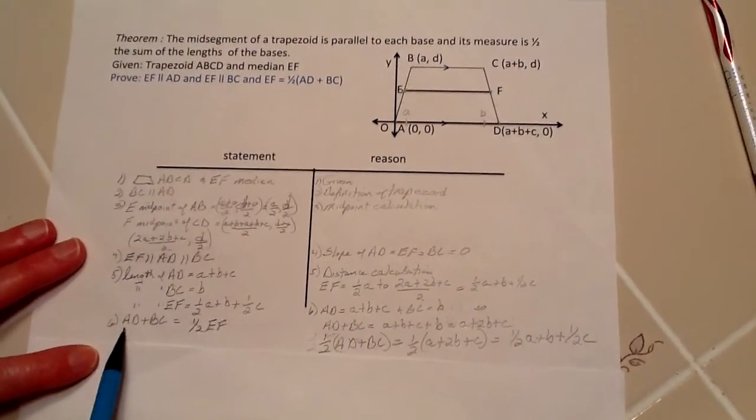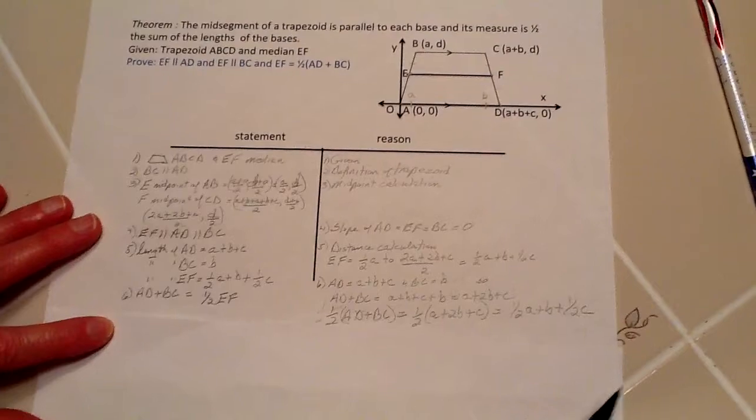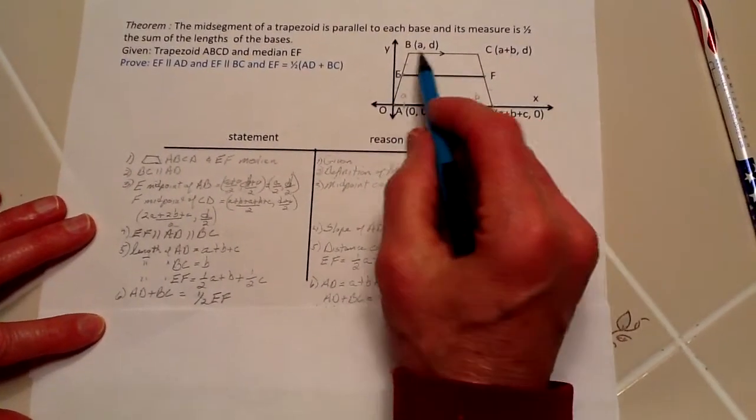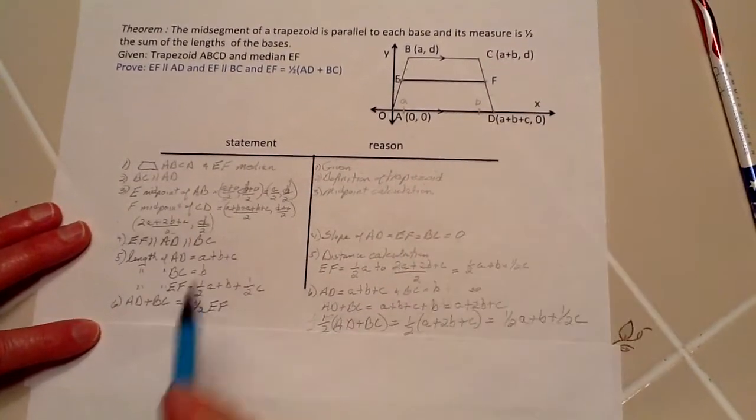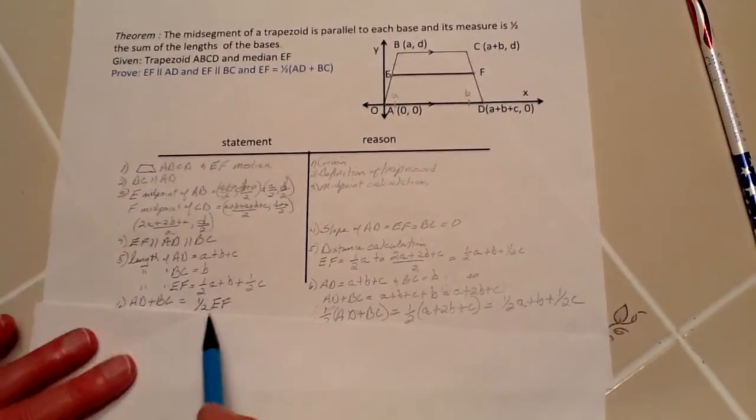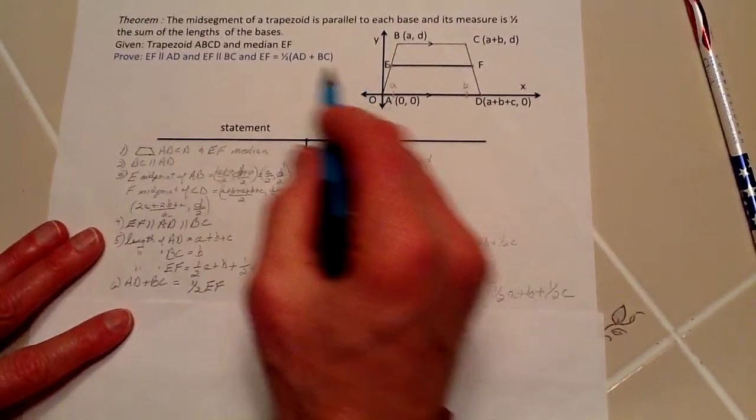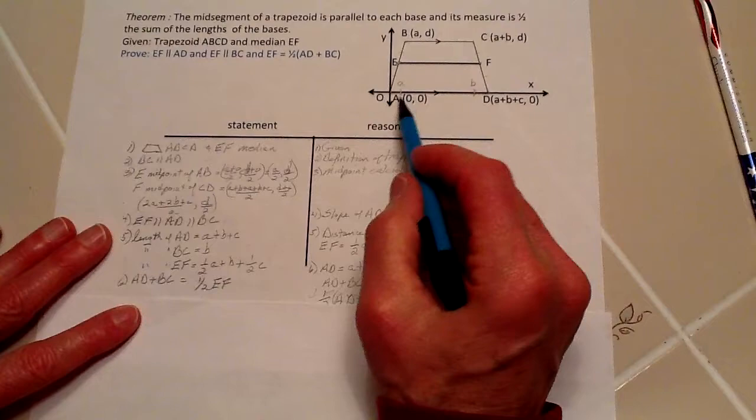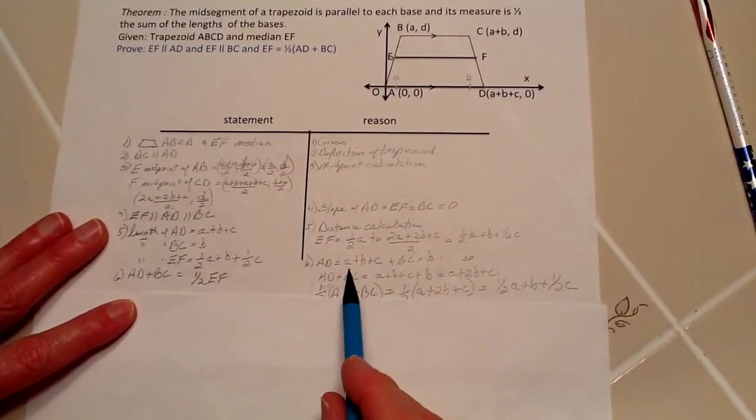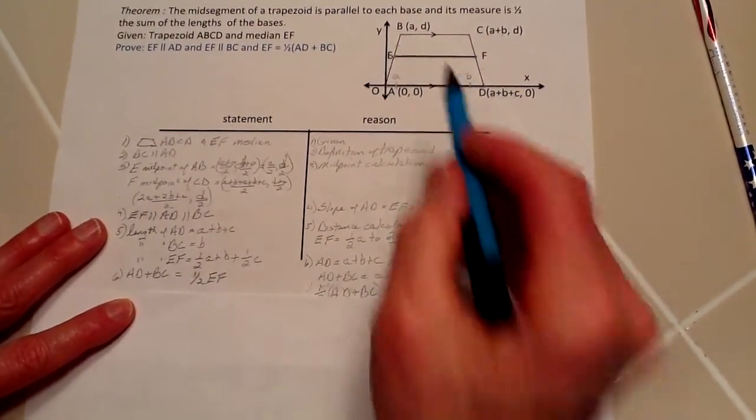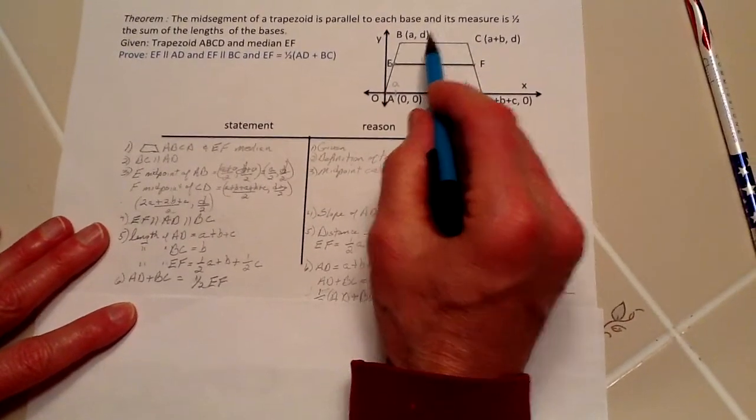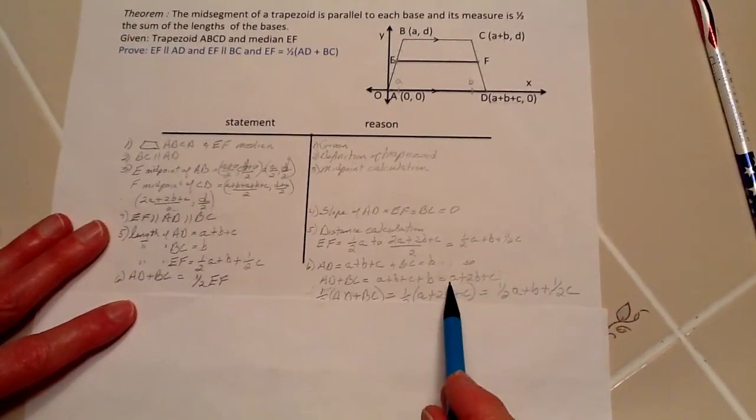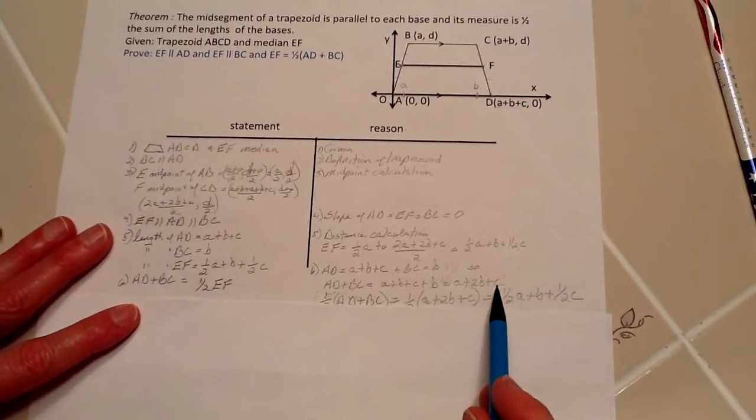For AD plus BC, that equals what we're trying to prove for EF. AD is this distance of A plus B plus C, and BC is B. When we add these together, we end up with A plus 2B plus C.